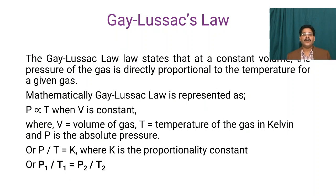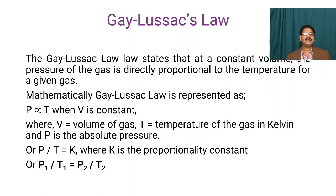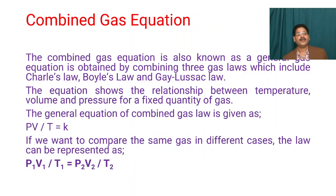The third gas law is Gay-Lussac's Law. According to Gay-Lussac's Law, at constant volume, the pressure of a gas is directly proportional to the temperature for a given gas. Mathematically, P ∝ T when V is constant, where V is volume, T is temperature in Kelvin, and P is absolute pressure. It can also be written as P/T = k, or as P₁/T₁ = P₂/T₂, so any unknown value can be calculated.